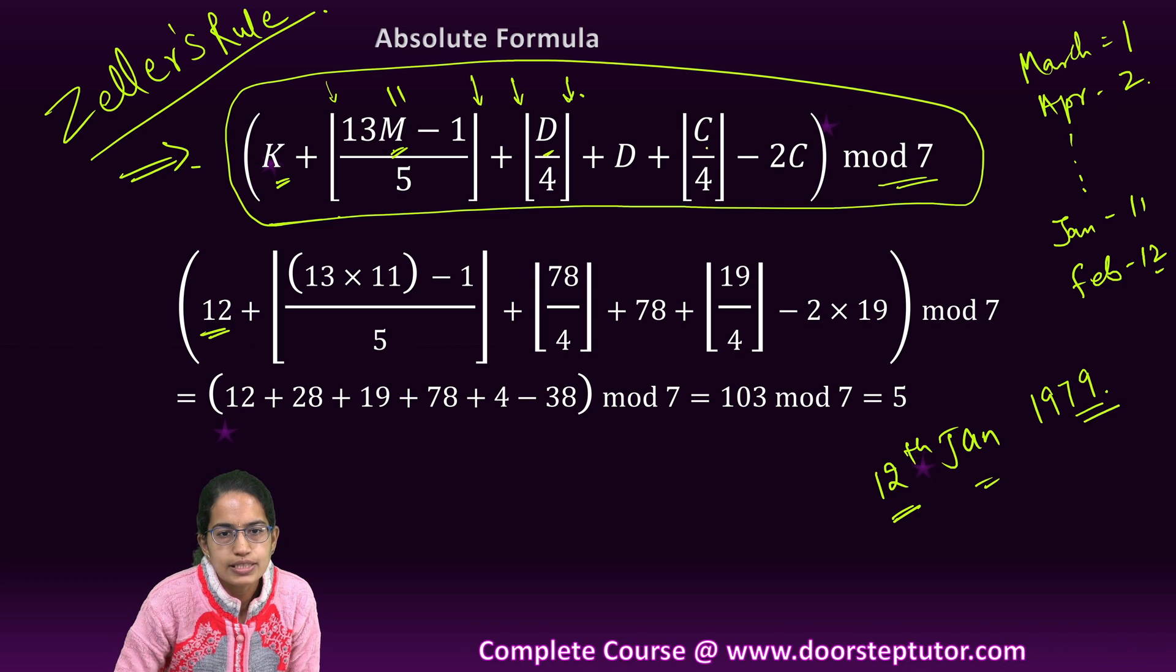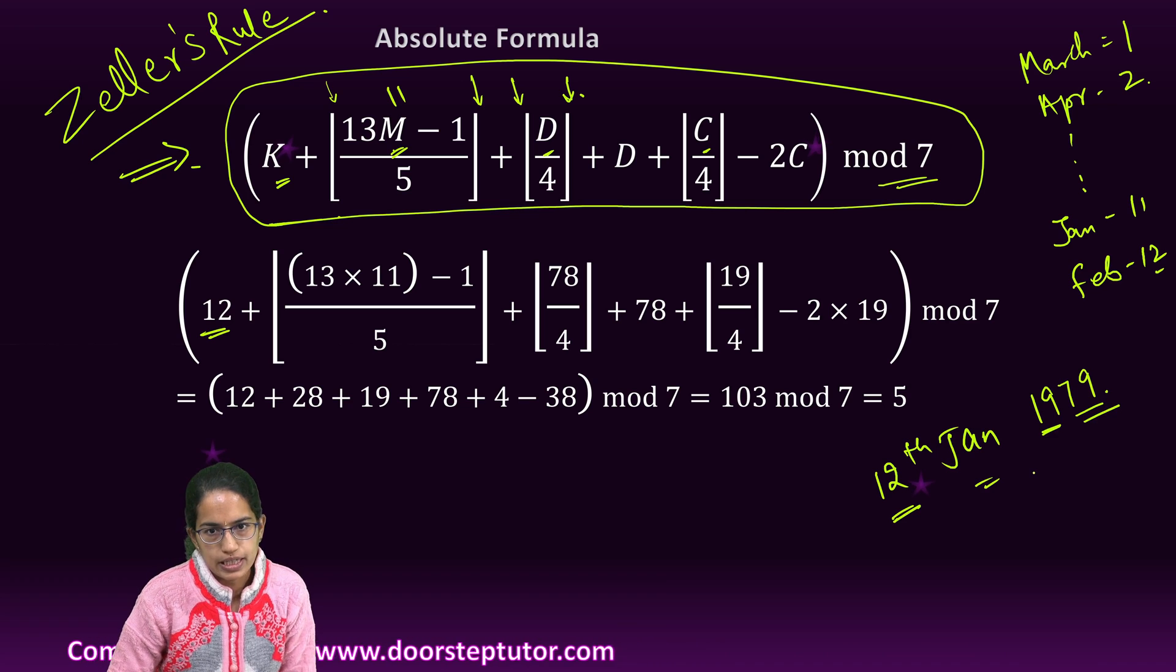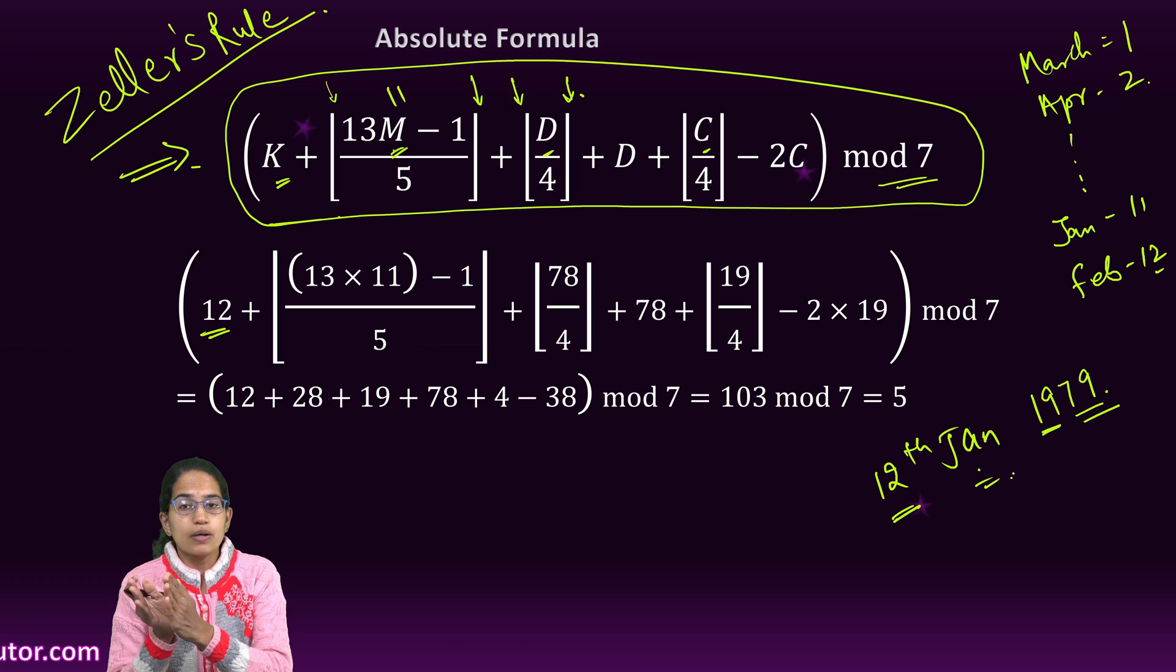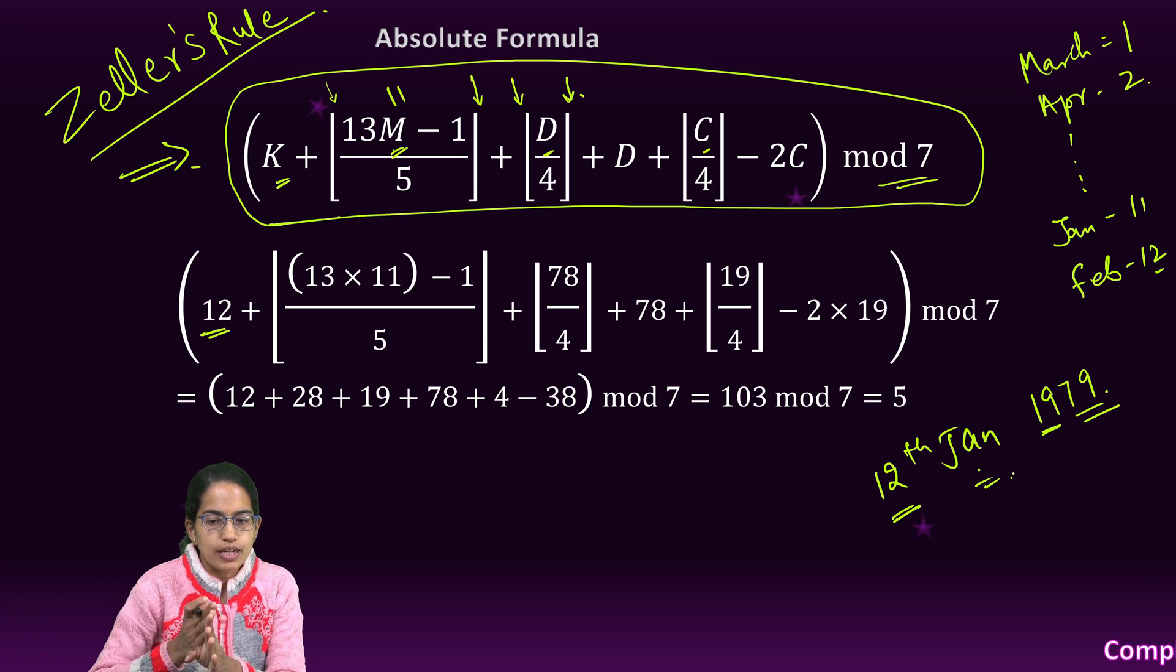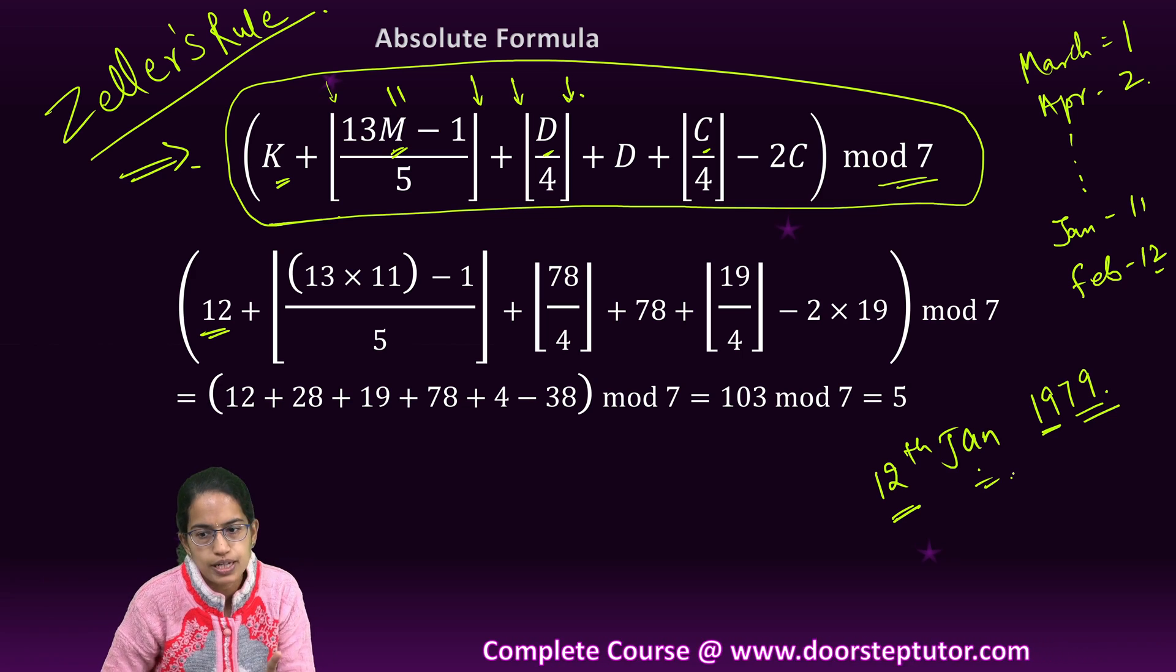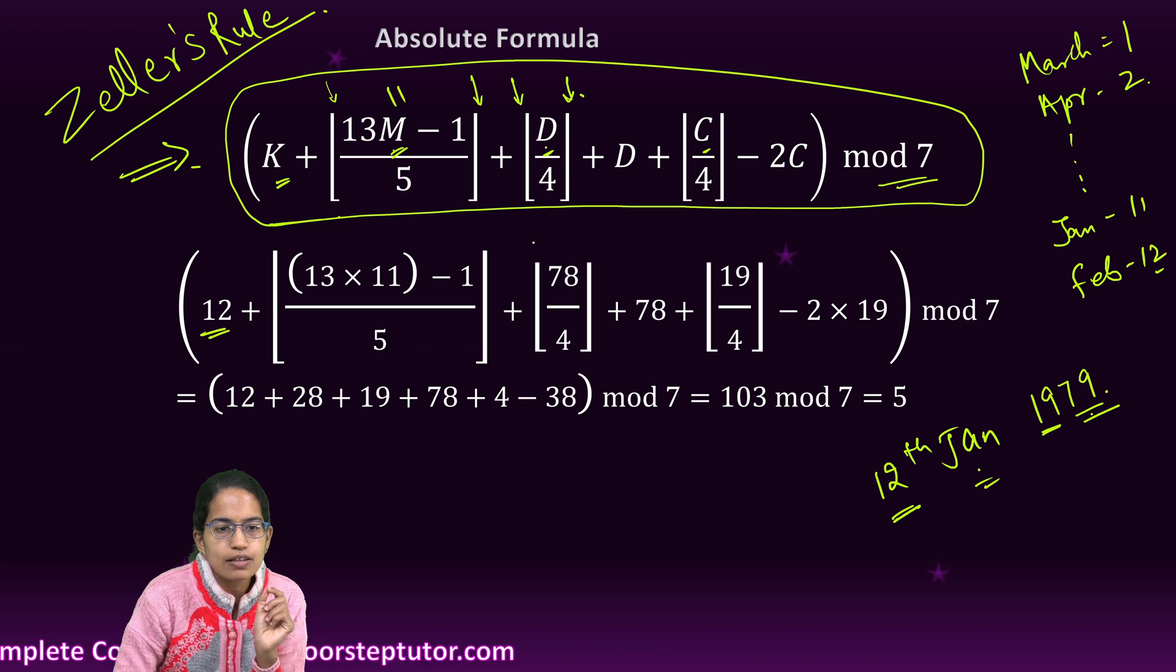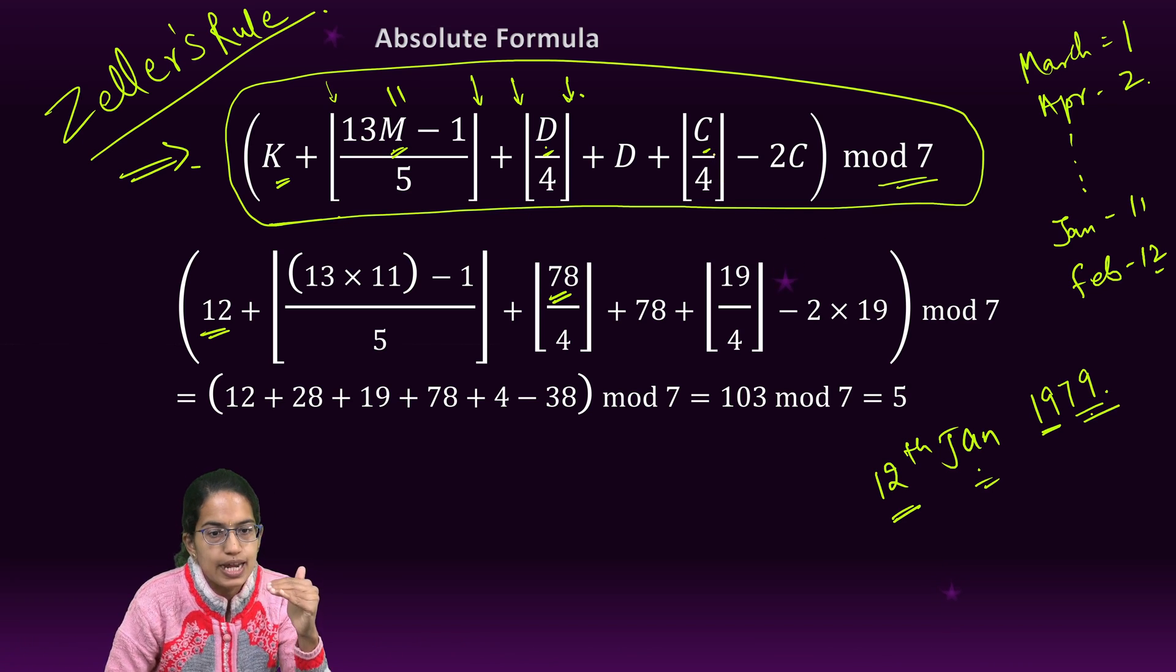Now D is the last two digits, which is 79, and C is the first two digits of the year, which is 19. In case of January and February, since we are counting January and February from the previous year, we start the year from March and we are counting January and February as the previous year. Only for the case of January and February, we would consider D as minus 1. So if it is 79, we will take 78.